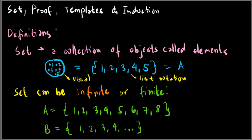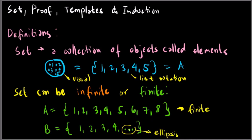One property of a set is that it can be infinite or finite. For example, set A = {1, 2, 3, 4, 5, 6, 7, 8} is a finite set because it has a beginning and an end. While set B = {1, 2, 3, 4, 5, ...} — the ellipsis denotes 'so on and so forth' — has no end, so this set is what we call infinite.